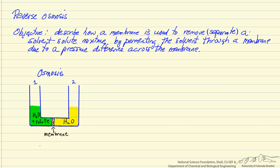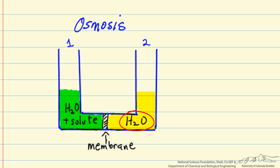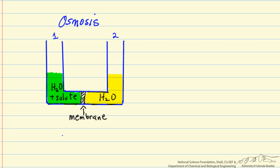Before talking about reverse osmosis, let's look at what the process of osmosis is. If we were to put water on one side of a membrane, with the same hydrostatic pressure on both sides, we have water plus a solute on the left side and pure water on the other side. This means the chemical potential of water on side 1 is less than on side 2, because the mole fraction of water on side 1 is less than on side 2.